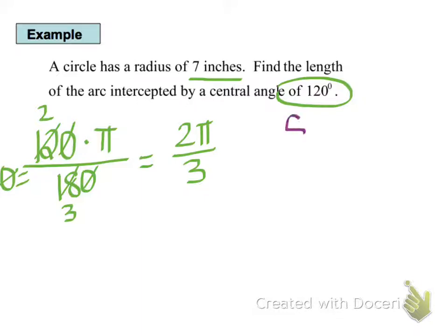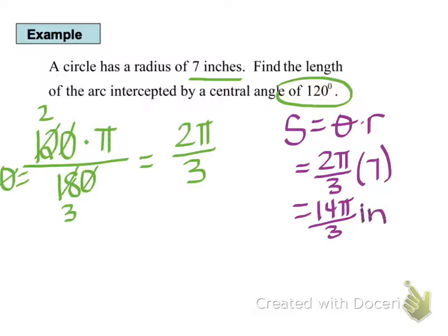Now, to find our arc length, we're going to take our theta times the radius, that's the formula we just learned. So we'll say 2 pi over 3 times 7 inches, and we get 14 pi over 3 inches. Now, in terms of the real world and word problems, 14 pi over 3 inches doesn't mean a lot to me. So this is one case where we probably would want to multiply 14 pi and divide it by 3 to get about 14.66 inches.